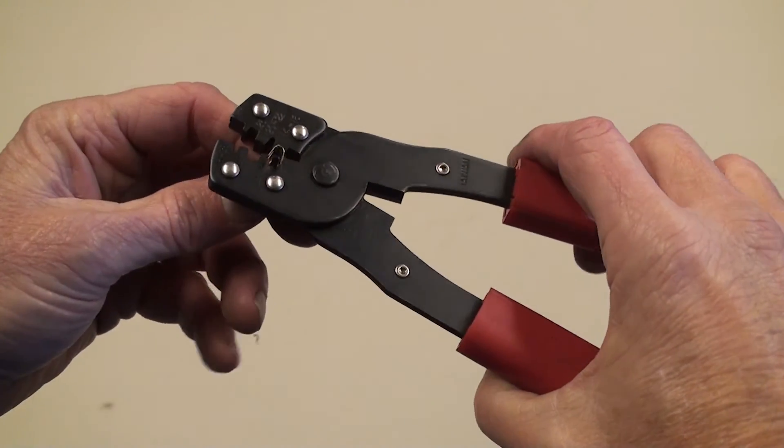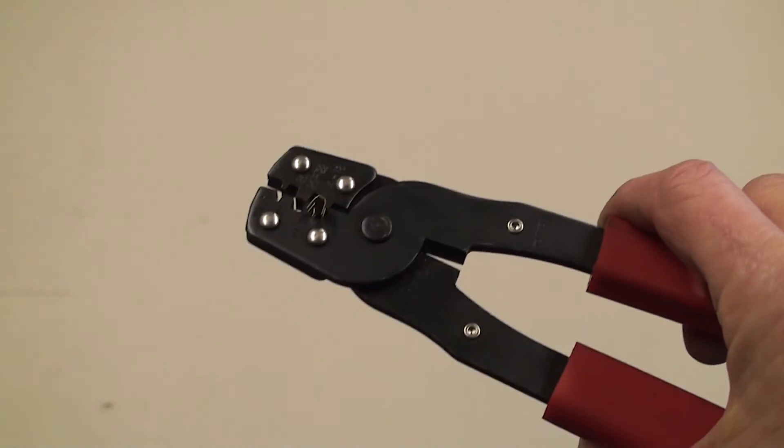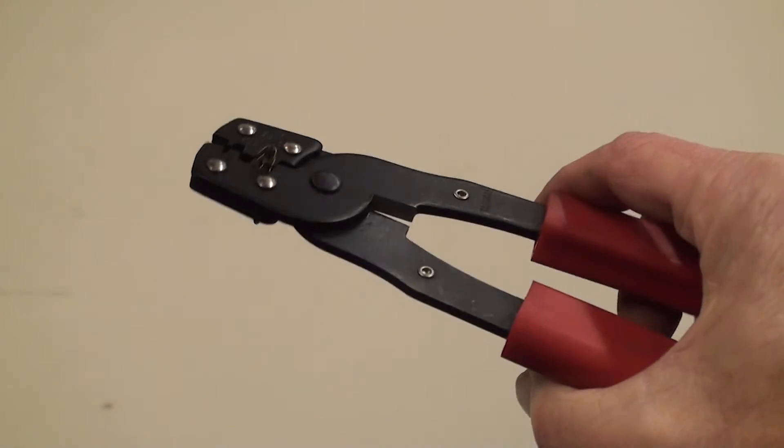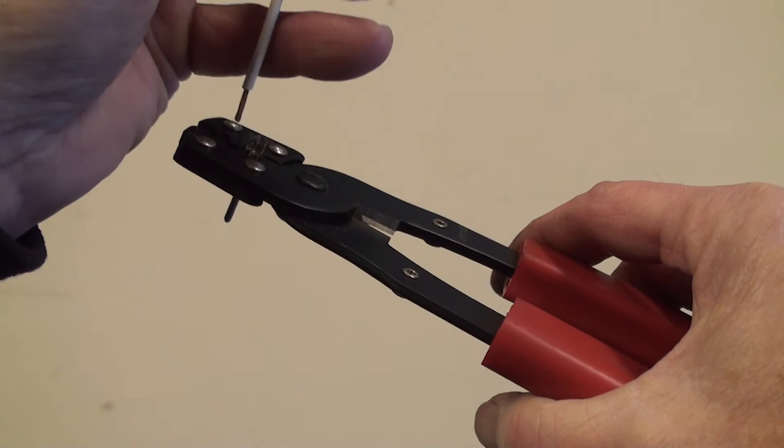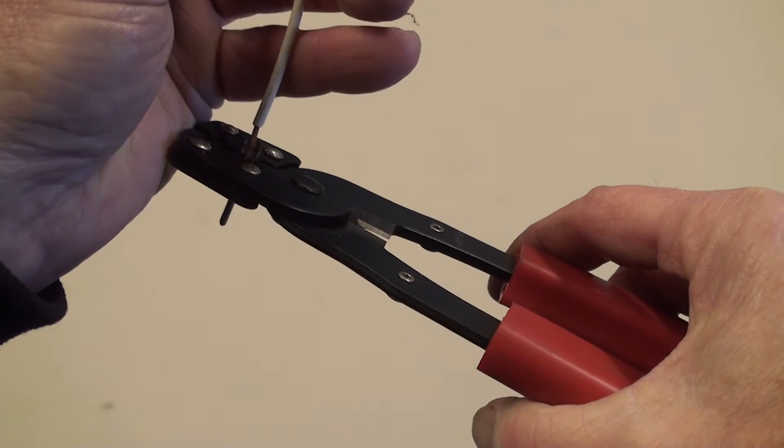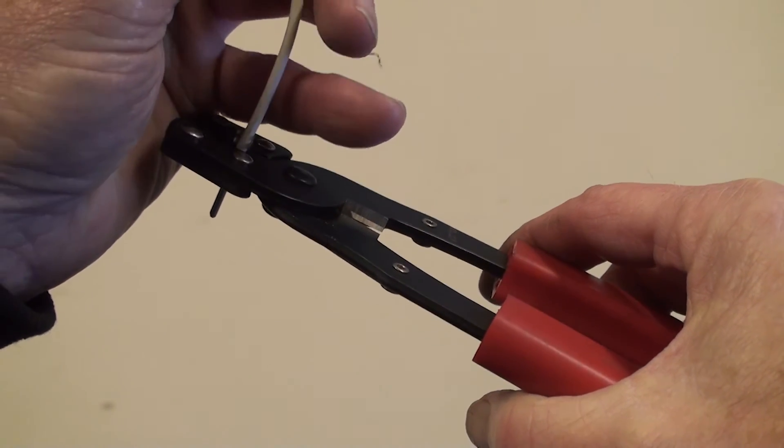To install and crimp the terminal, I have found that it is easier to install the terminal in the plier and then insert the wire. I like to be able to see how far the wire fits into the terminal.